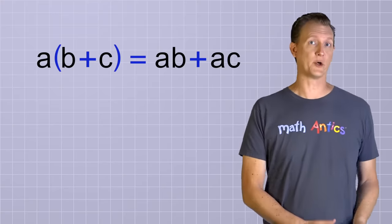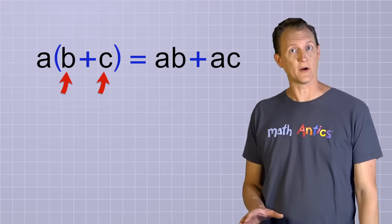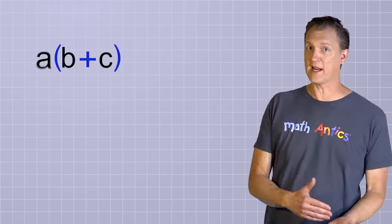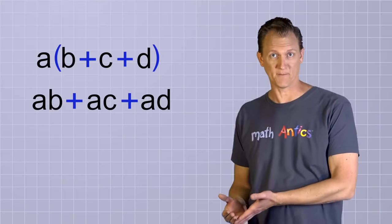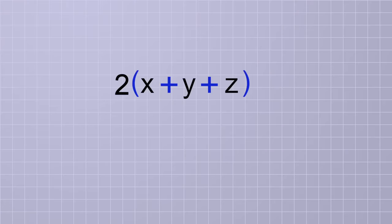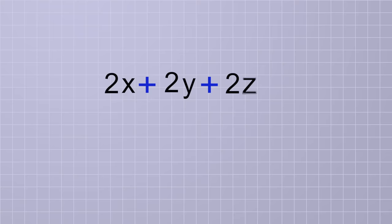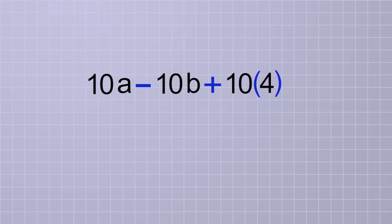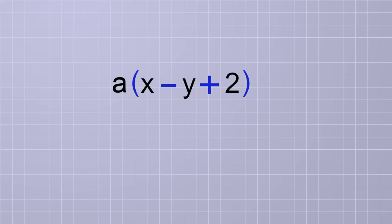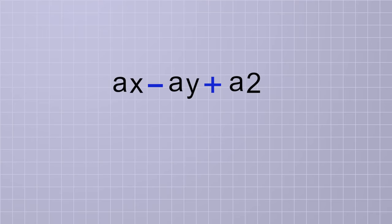So this is the basic pattern of the distributive property. It's usually just shown with two members in the group, but remember that it works for groups of any size. We could have a times the group b plus c plus d, and the equivalent distributed form would be ab plus ac plus ad. Here are a few quick examples: 2 times the group x plus y plus z can be changed into 2x plus 2y plus 2z. 10 times the group a minus b plus 4 can be changed into 10a minus 10b plus 40. And a times the group x minus y plus 2 can be changed into ax minus ay plus 2a.